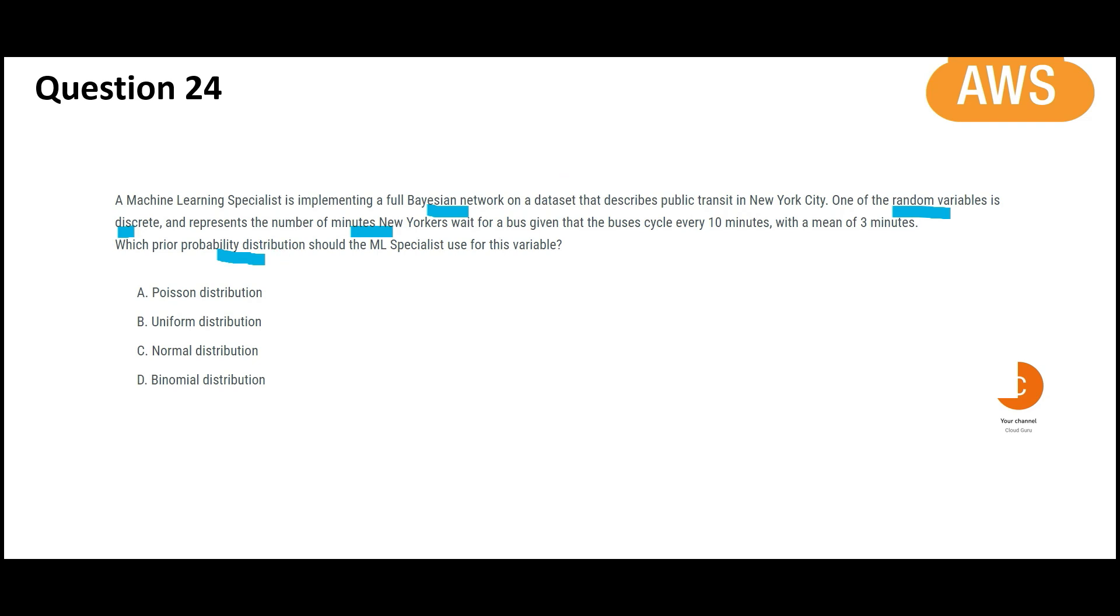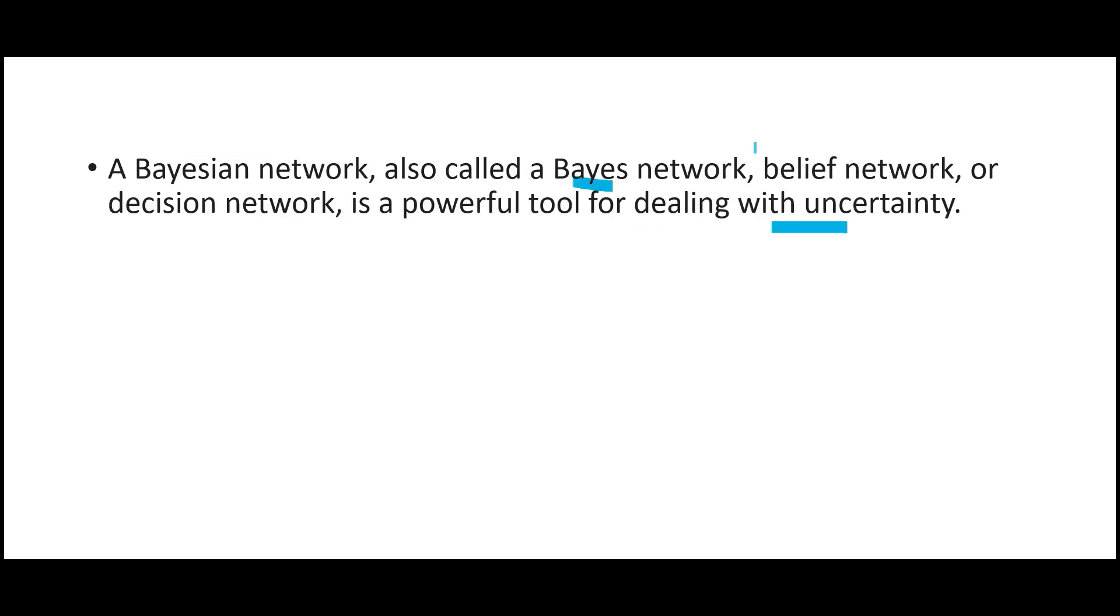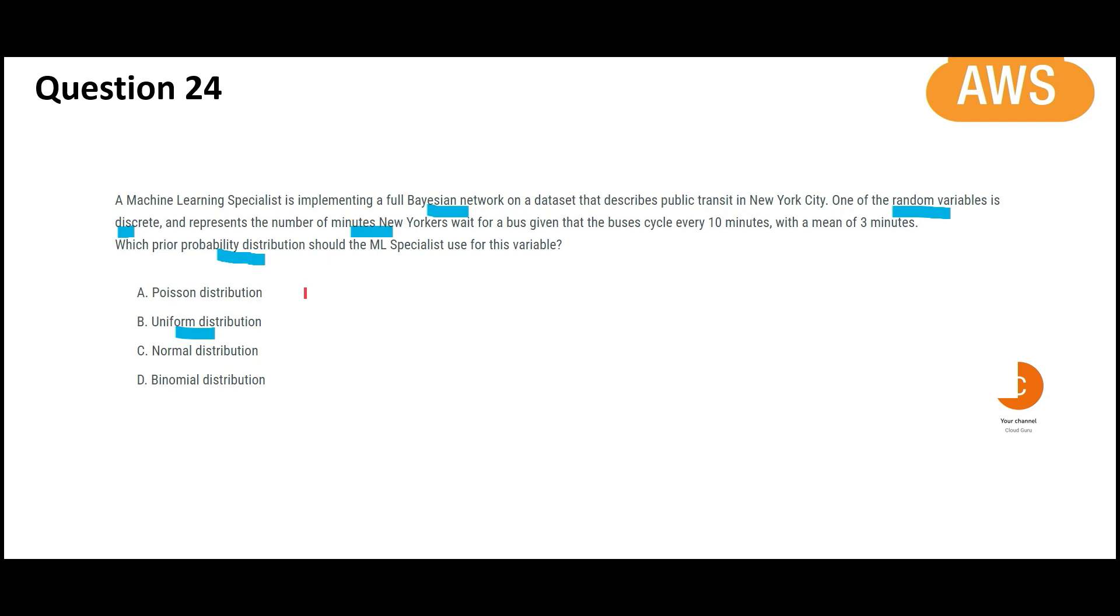Will you use uniform distribution? We use uniform when we are dealing with certainty. Right now we are dealing with uncertainty. Because the moment they are using Bayesian network, they are dealing with uncertainty. So uniform distribution will not work.